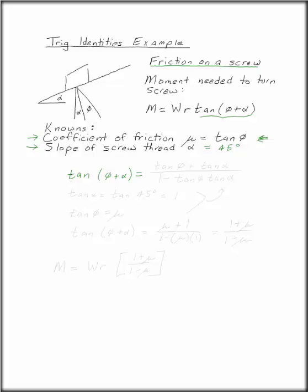If you look up earlier in the page, you see the sum of two angles for a tangent is given by tangent phi plus tangent alpha over 1 minus tan phi tan alpha.